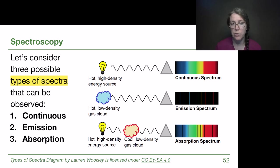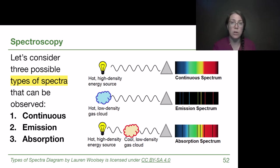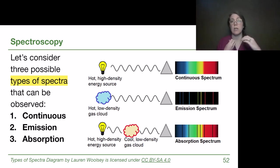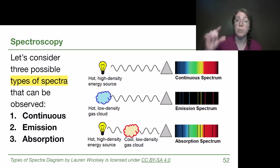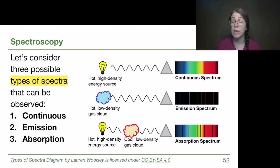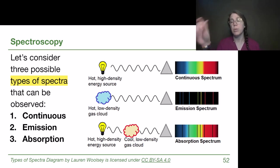The third option is a hot high-density energy source — maybe a light bulb — but with a cloud of cooler gas between the viewer and the source. That cooler gas has electrons in low energy states, maybe the ground state, and they have the capacity to absorb photons and jump up to higher energy levels. They only absorb photons associated with those specific gaps in the ladder. When they take in those photons, we see missing lines in the spectrum — absorption lines — giving us an absorption spectrum: mostly the whole rainbow from the original source, but with missing pieces.